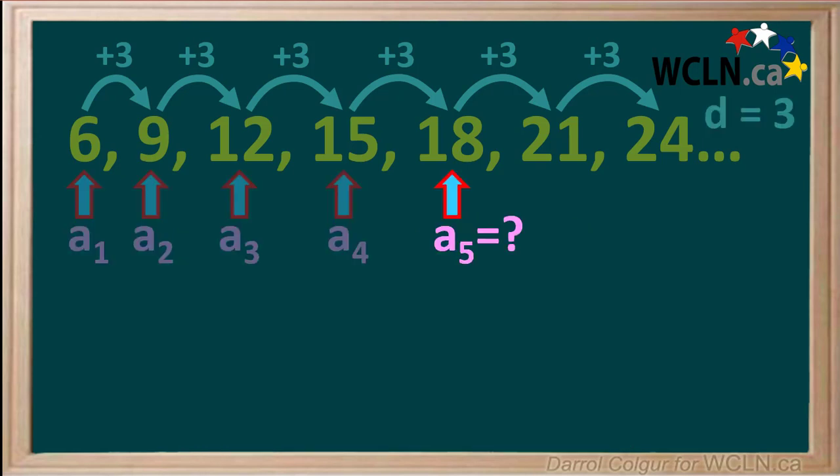Let's see how this equation works for the sequence we have here. We'll use it to predict the value for term 5, even though we already know what it is.